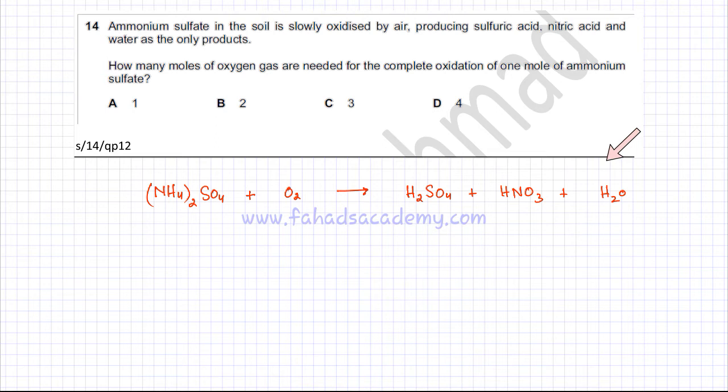If you look here, there are two nitrogens because there are two ammonium ions in ammonium sulfate. So you need to balance nitrogen. There should be two molecules of HNO3.